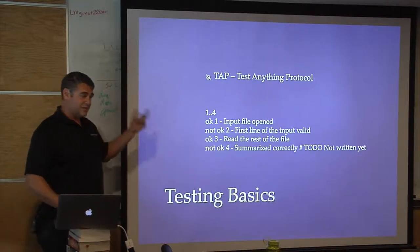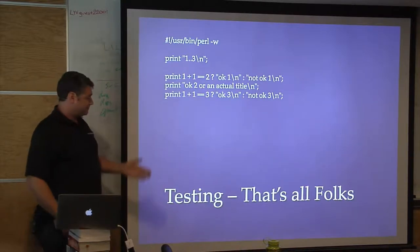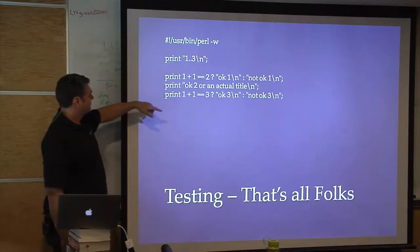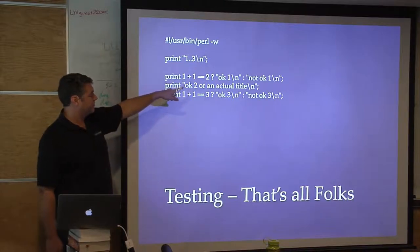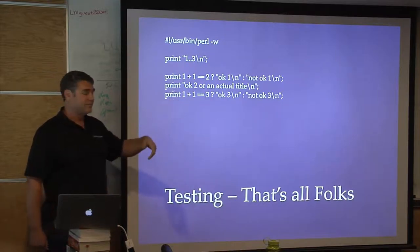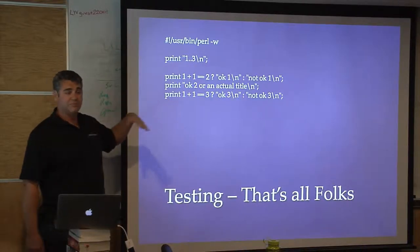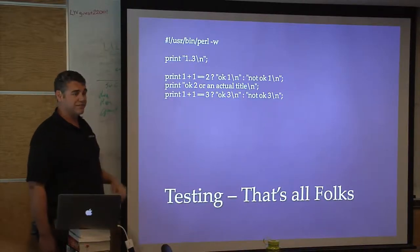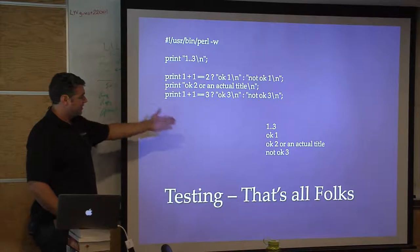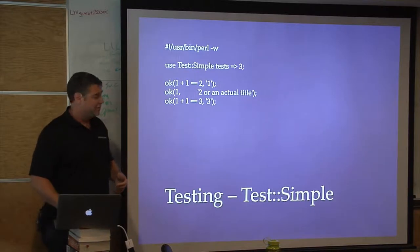OK means the test passed; not ok means it failed. In a simple Perl program you print '1..3', then for each test: if one plus one equals two, print 'ok 1'; otherwise print 'not ok 1'. The second test just prints 'ok 2'. The third one is failing. From that we get the TAP output, and we've communicated to the world how good or bad our tests are.